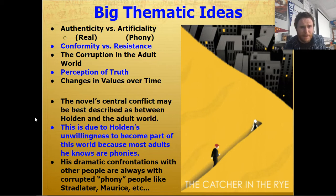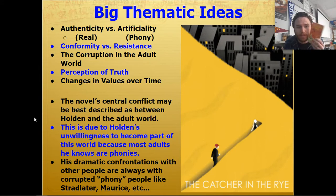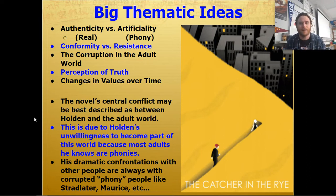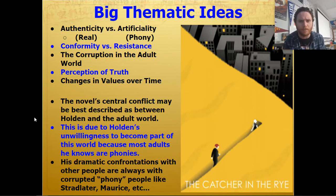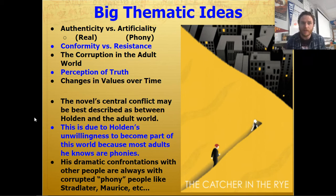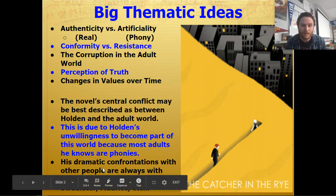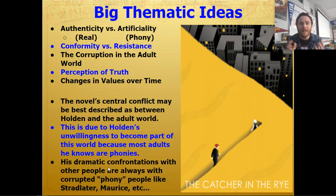The novel's central conflict may best be described as between Holden and the adult world. I think this is due to Holden's unwillingness to become part of this world, because most adults he knows are phonies. So why would he want to participate in this big fake machinery? His dramatic confrontations with other people always seem to be with the corrupted, phony people, like Stradlater or Maurice, the pimp. He definitely has physical altercations, violent confrontations with people he considers phony.